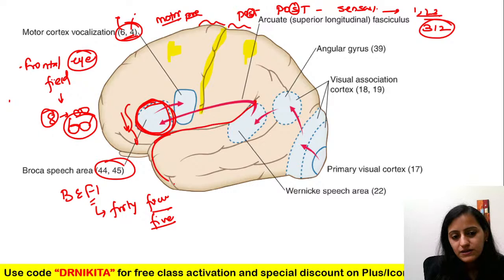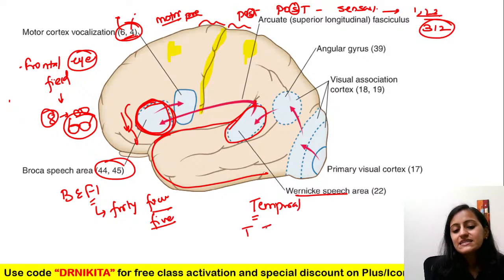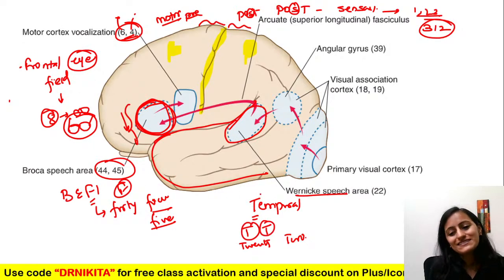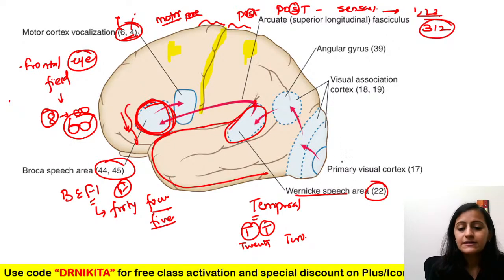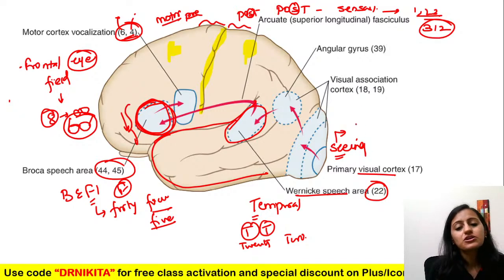For Wernicke's — this is the temporal lobe, superior temporal — T-T gives 22. So Wernicke's is area 22. The primary visual cortex: visual — S-E gives 17. Primary visual cortex is area 17. Areas 18 and 19 are visual association areas.